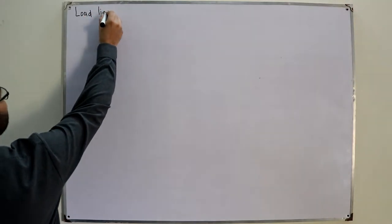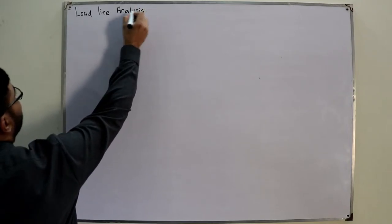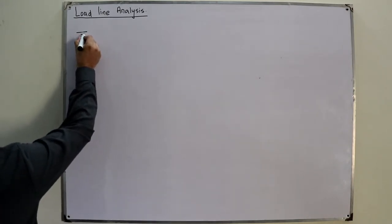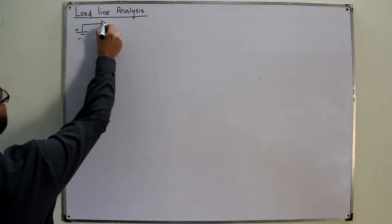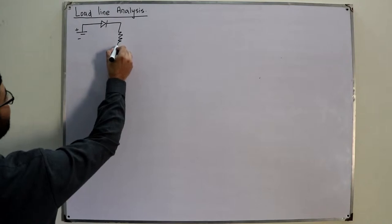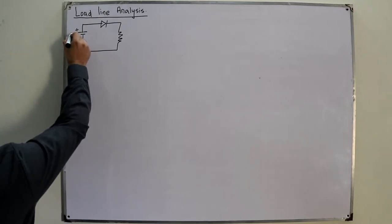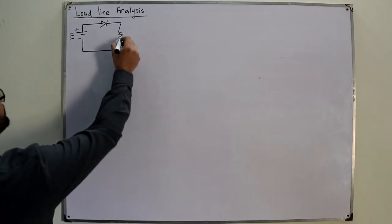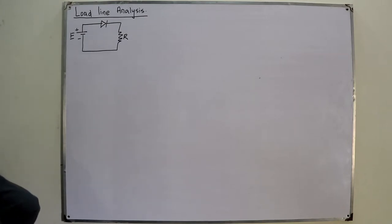So what is a load line? A load line is the line obtained from the circuit equation. Now why is it called load line analysis? Consider a simple circuit where we have a DC battery source with a plus-minus potential, a diode connected in series, and then a load resistor. I'm naming the voltage source E and the resistor RL, going in accordance with the book.